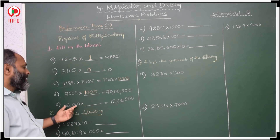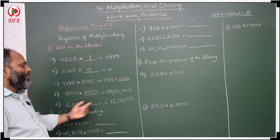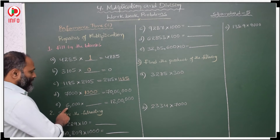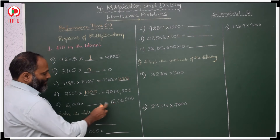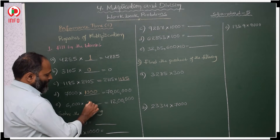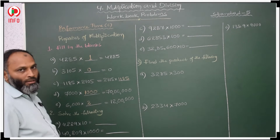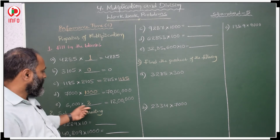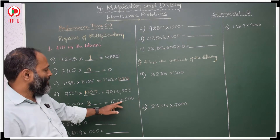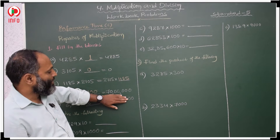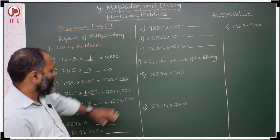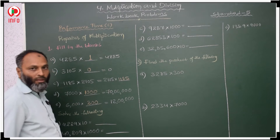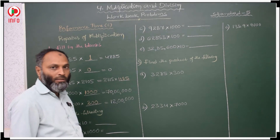Next: 6000 and 12 lakhs. In the 6 table, when do we get 12? 6 twos are 12. Here, how many zeros are there? 1, 2, 3. After that, how many zeros are left? 2 zeros. Those 2 zeros you keep here. This is your answer.